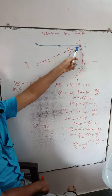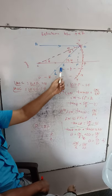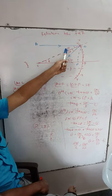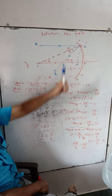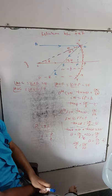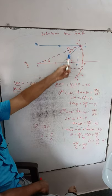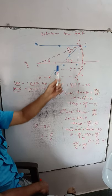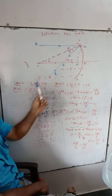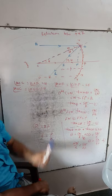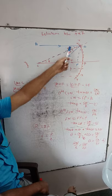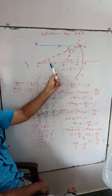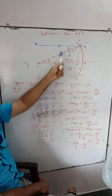AO is the incident ray, OF is the reflected ray, and CO is the normal. This is the angle of incidence and this is the angle of reflection. According to the laws of reflection, angle of incidence equals angle of reflection, so angle AOC equals angle COF equals theta. These two are equal. Since these are alternating angles, angle AOC also equals angle OCF equals theta.